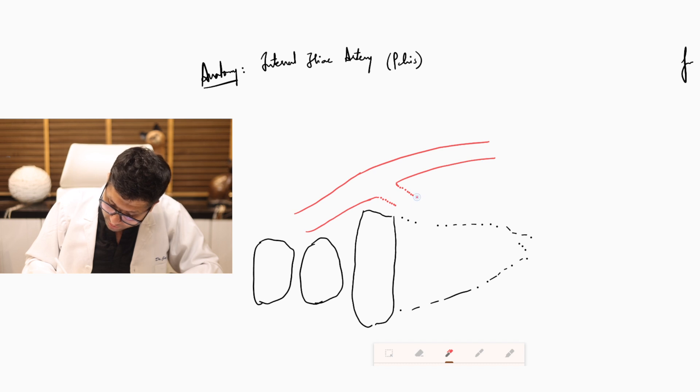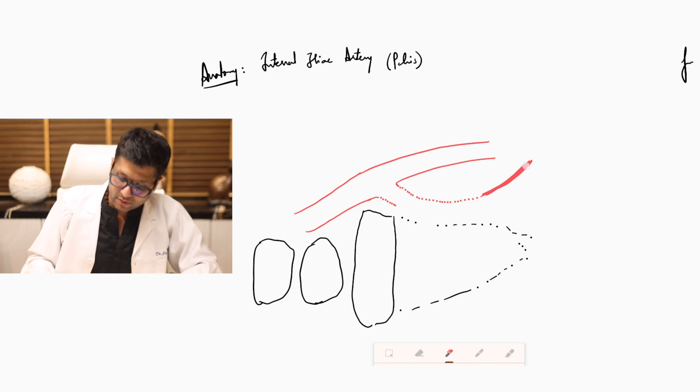This vessel which goes into the depth of the pelvis is the internal iliac artery, which then terminates as the obliterated umbilical. I am drawing it as an obliterated vessel.